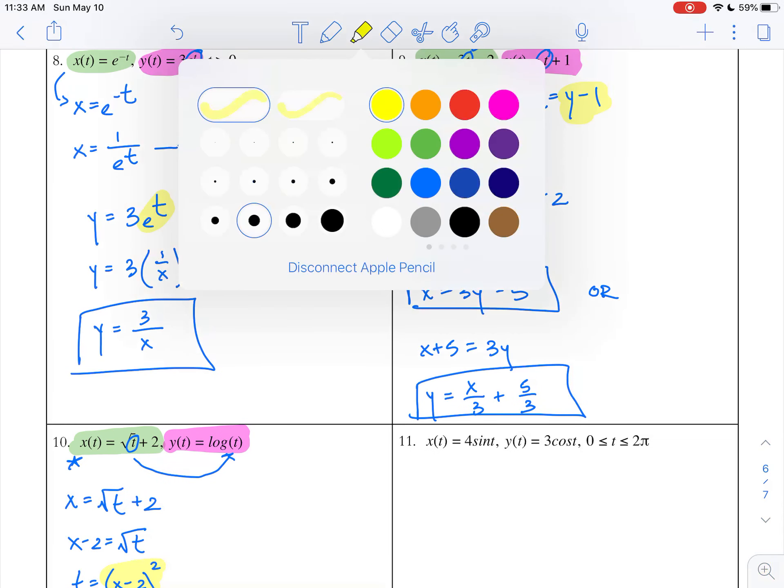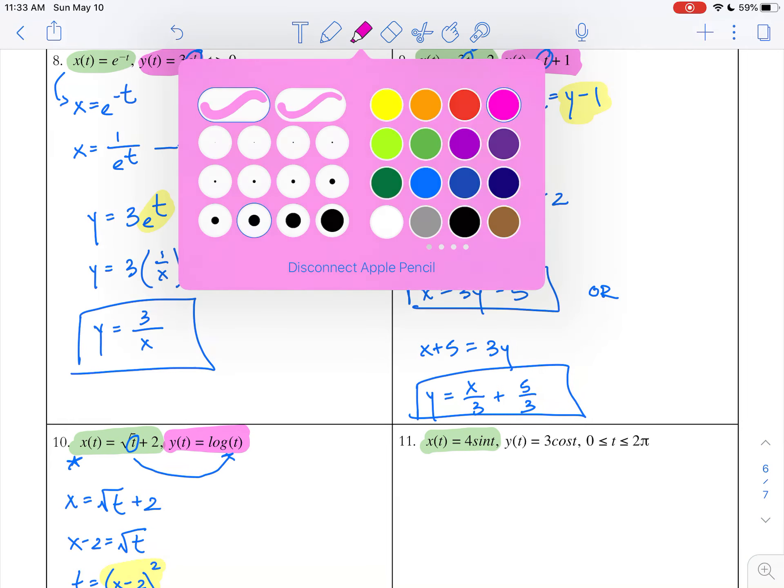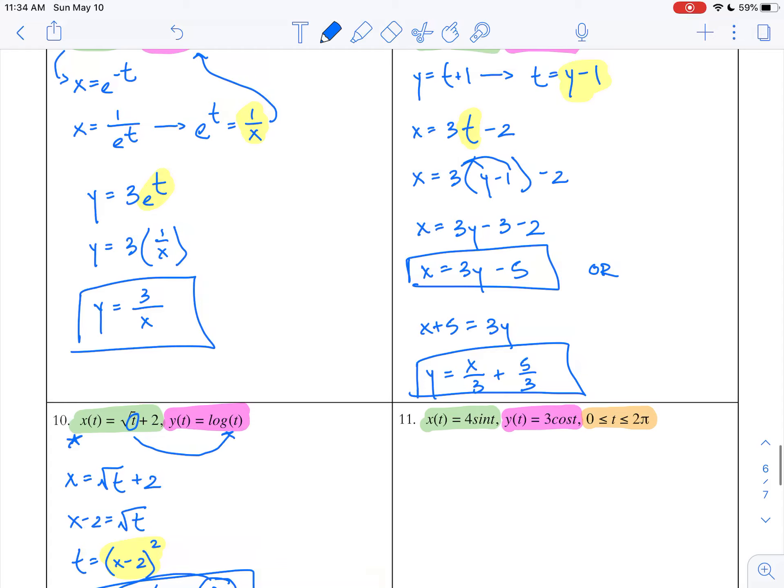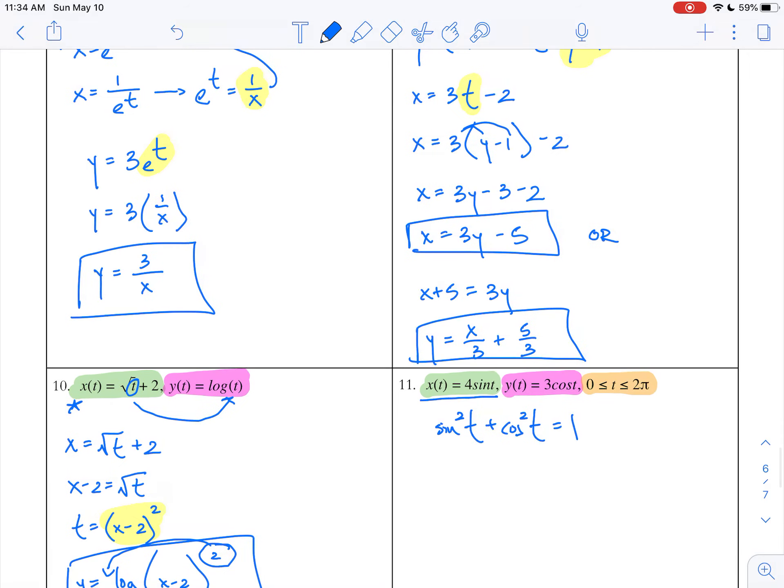Let's do one last example. I've got x(t) = 4sin(t) and y(t) = 3cos(t), and I only want to go one time around the unit circle. This should look familiar—it should look a lot like questions 4 and 5. Let's think about the strategy that was helpful for us there. We knew we could call upon sin²(t) + cos²(t) = 1.